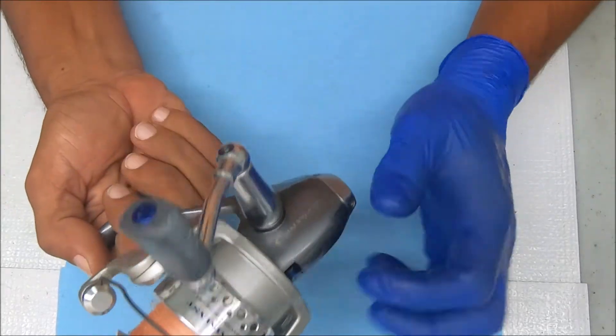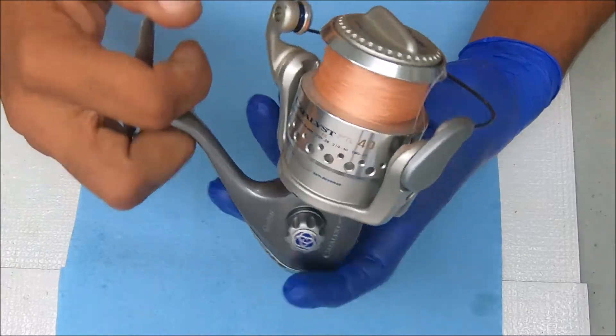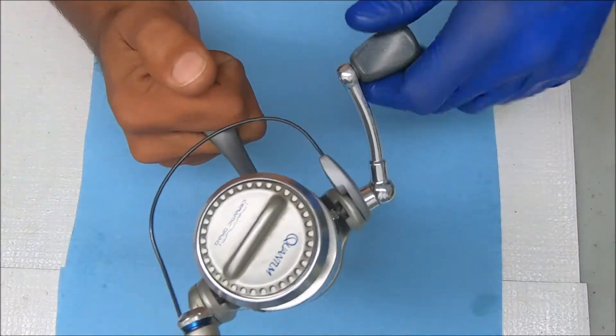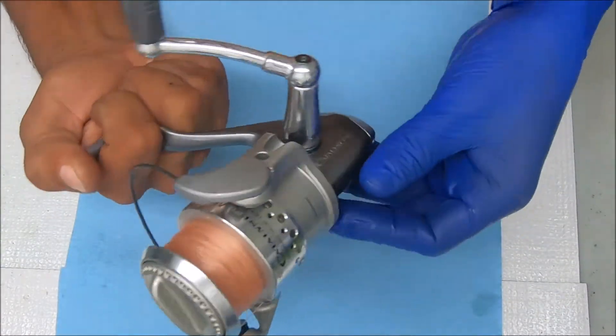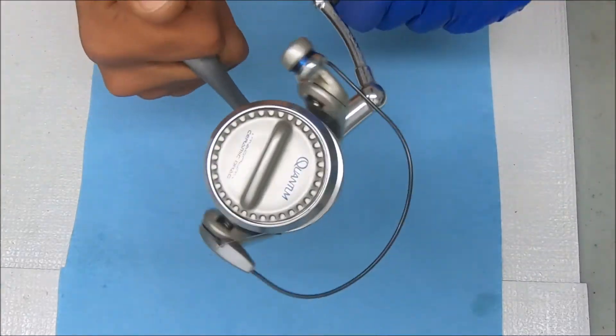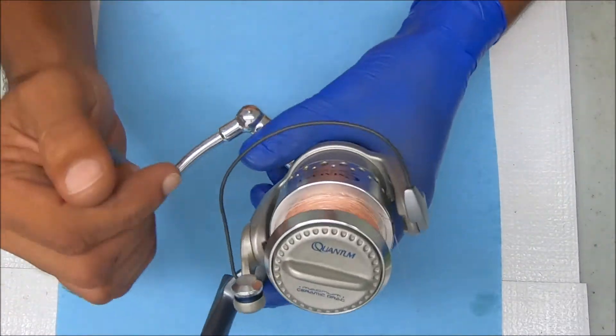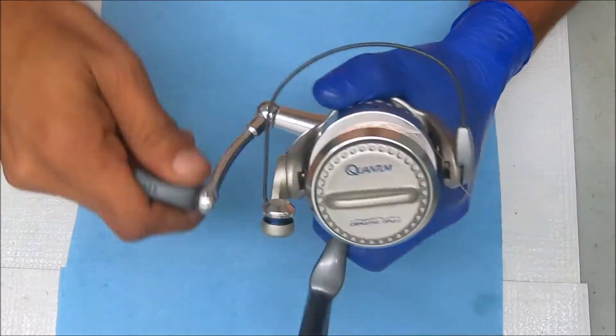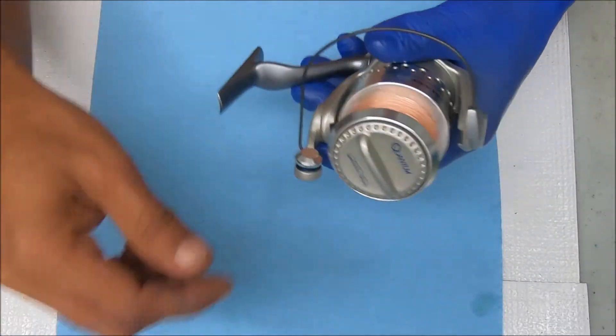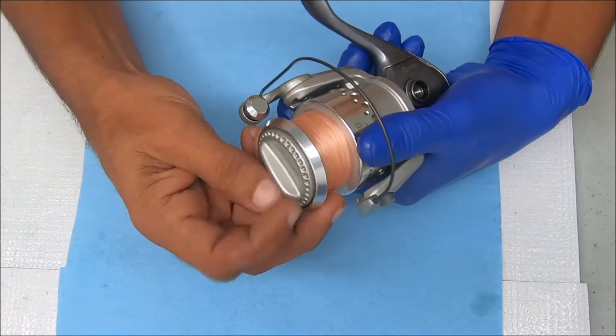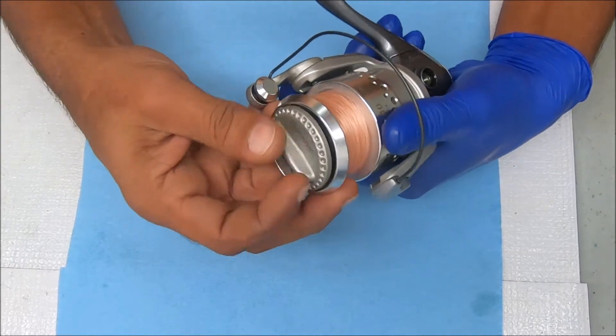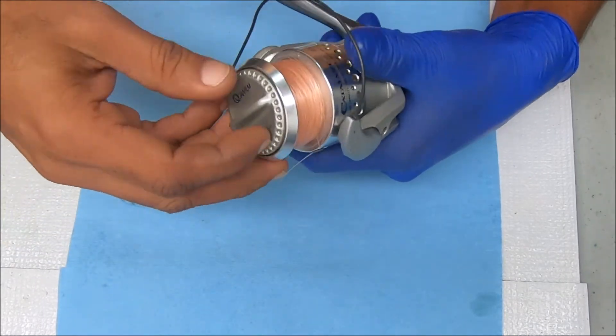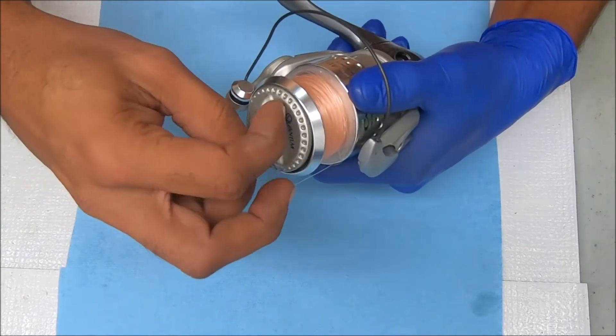Hey everybody, today we're gonna work on a Quantum Catalyst 40. It doesn't have any anti-reverse. When I previewed this video, I said I was concerned that I might not be able to source the parts for this, so hopefully the things in there can be refurbished. Without further ado, let's get right into it. Don't forget to hit that subscribe button if you like the content that I put out, as well as hitting that like button and let your friends know about the channel as well.